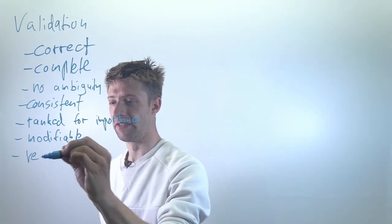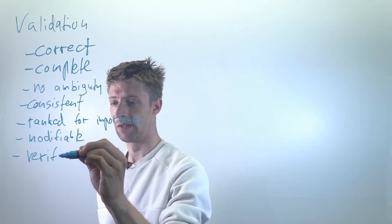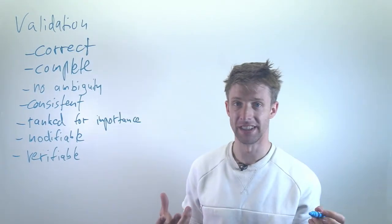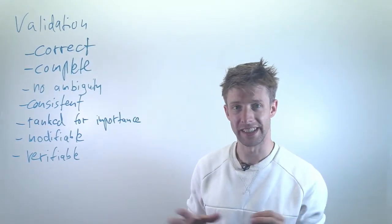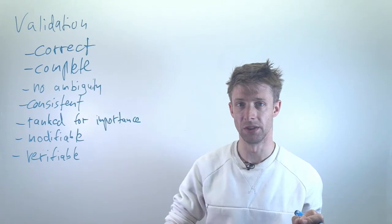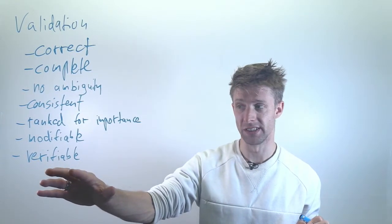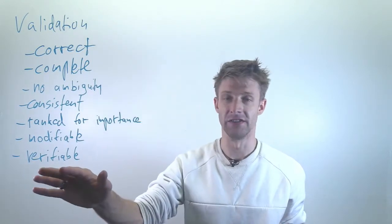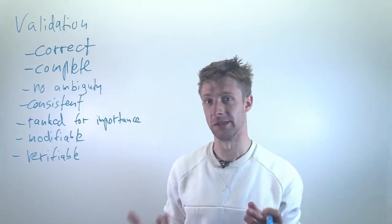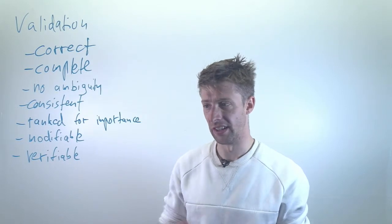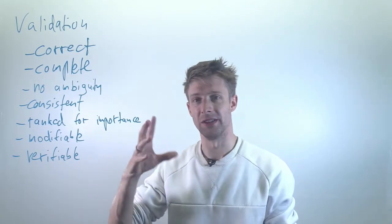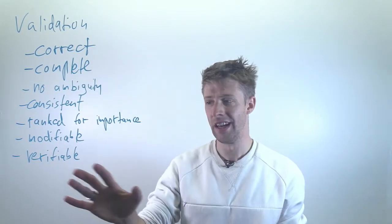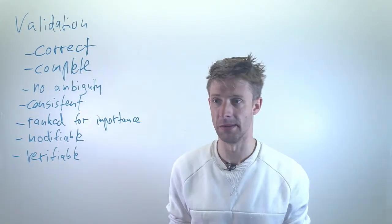They should be verifiable. That means you have to be able to write, for example, a test that can make sure that the requirement is fulfilled or not. That goes back to, for instance, to the quality requirements. If it says the system shall be fast, then you cannot verify this because it's not clear what this means and how you measure it. If it's very clear how the scale, how the metric is, how you measure the response time, and it should be less than 500 milliseconds, then you have a verifiable requirement.